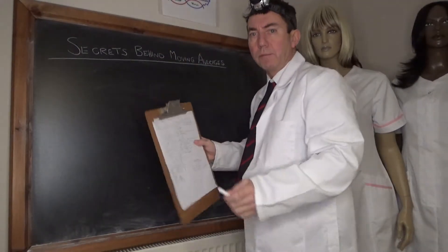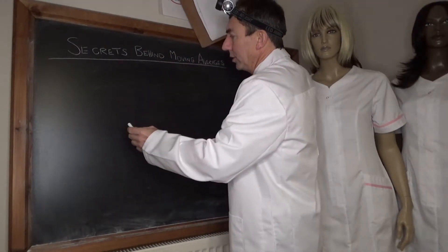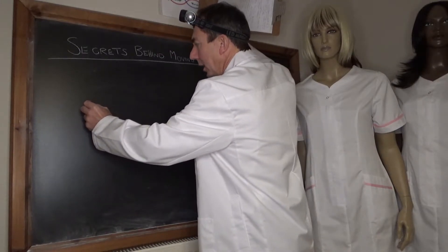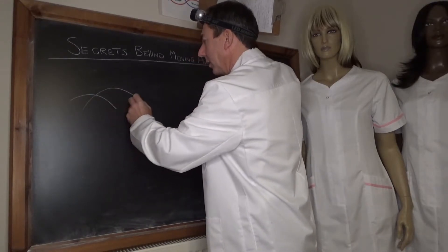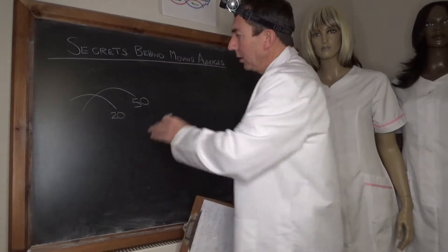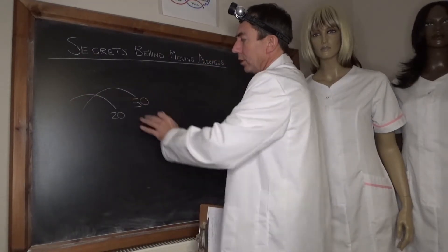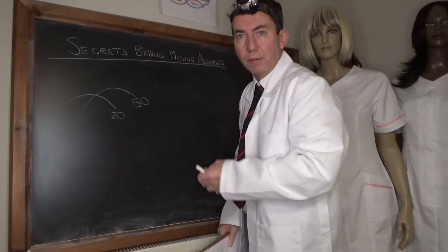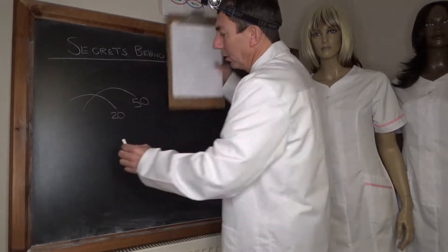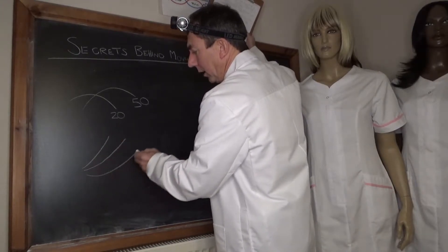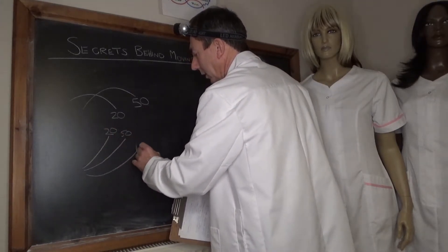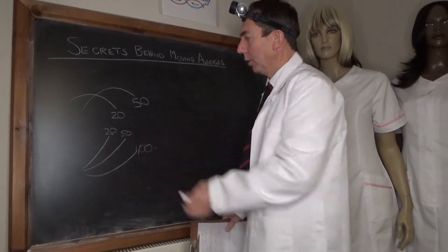The general garden-variety trader looks at moving averages in terms of whether one moving average is crossing another — say the 20 crossing the 50. They're looking for the faster moving average crossing the slower one on the downside, which in their view is indicative of market weakness and the start of a downtrend. They also look at how moving averages fan out — 20, 50, 100. Those are the standard ways of looking at moving averages.